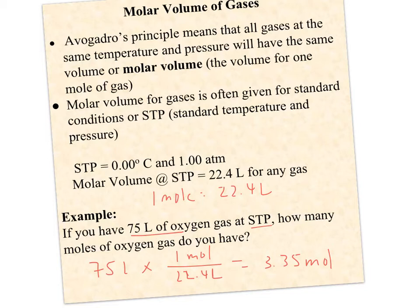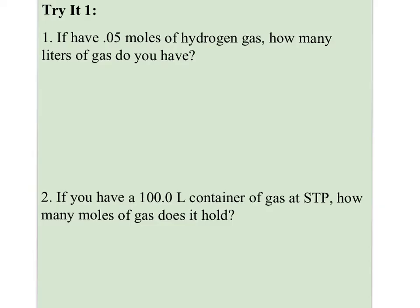And did it matter that it's oxygen gas? No, 75 liters of any gas at STP should be 3.35 moles of that gas. So here's a couple examples for you to try. Go ahead and pause in between these and see if you can come up with them on your own.